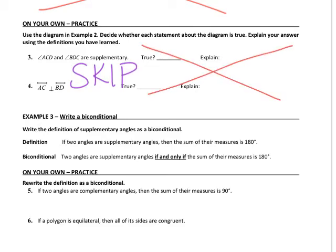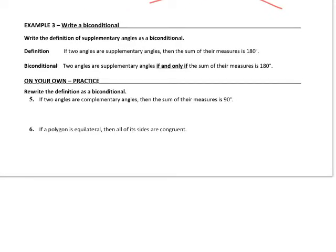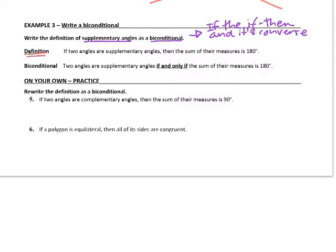We are going to look at the biconditional information in example number three: write the definition of supplementary angles as a biconditional. The biconditional is only written if the original if-then statement and its converse are both true. So the definition is: if two angles are supplementary angles, then the sum of their angle measures is 180 degrees.